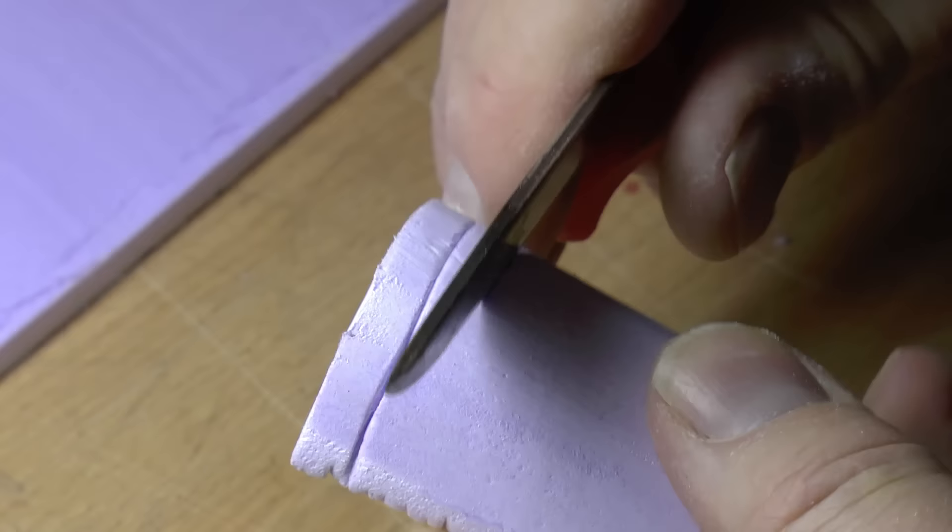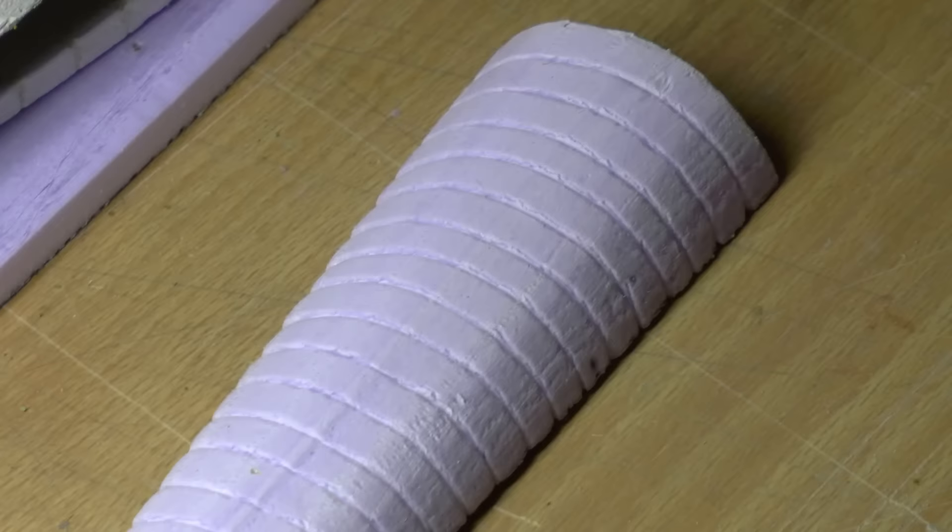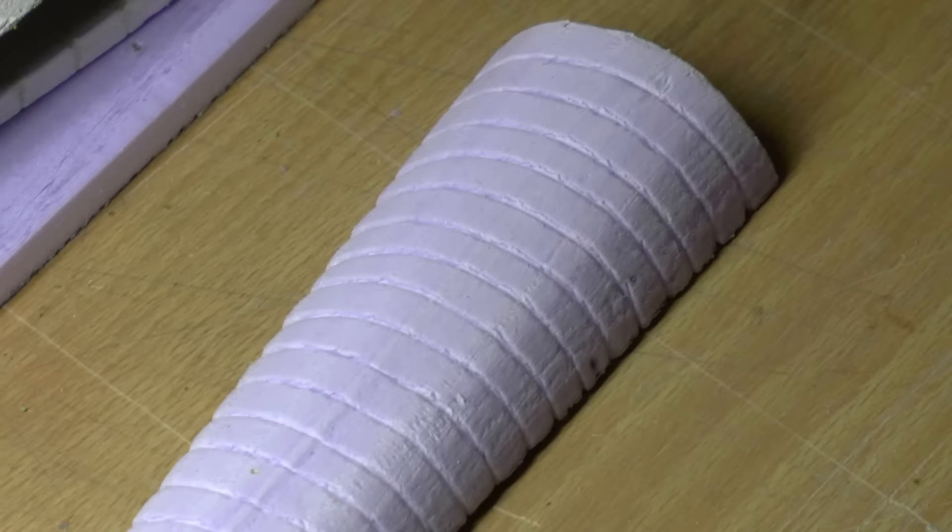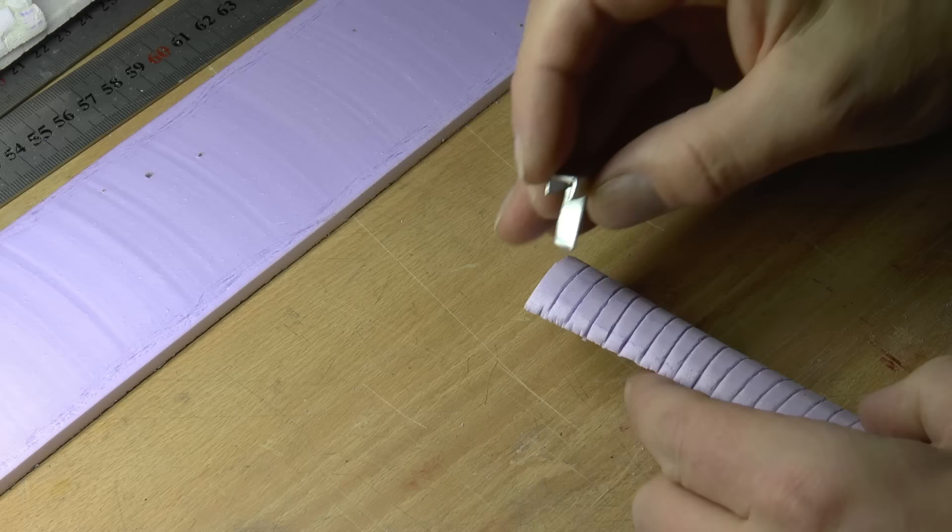Then I just press down the knife and let it roll over to the other side like this. And this is what it looks like when all of the slots are in place.